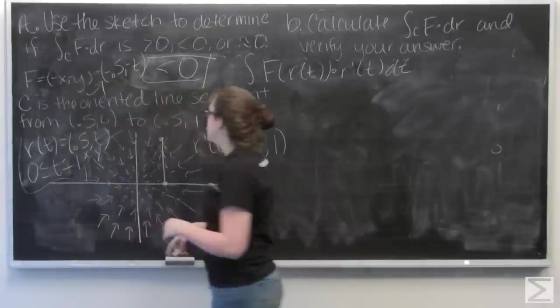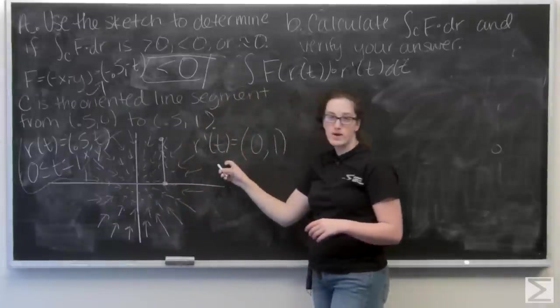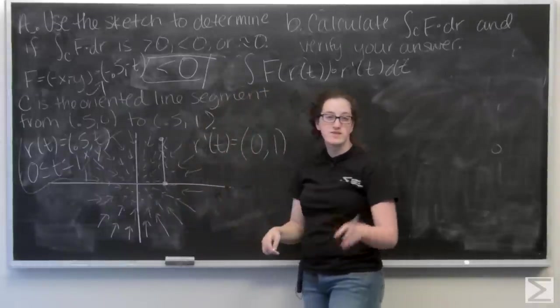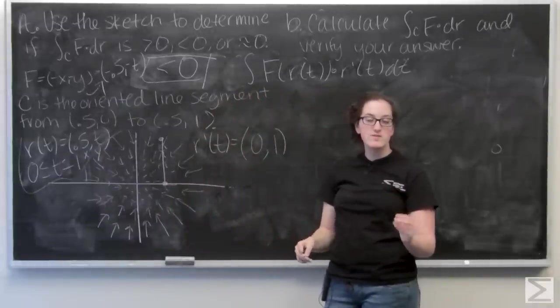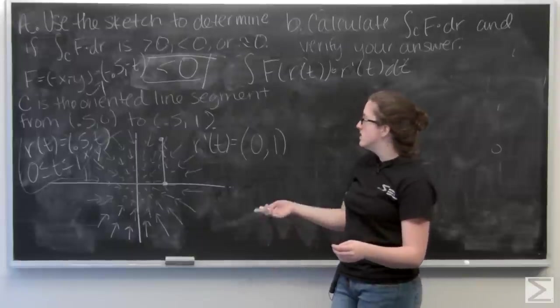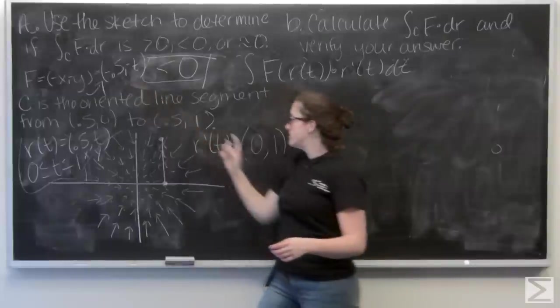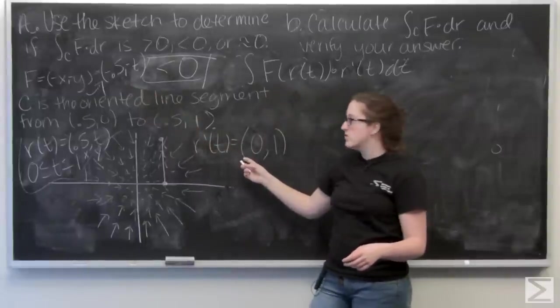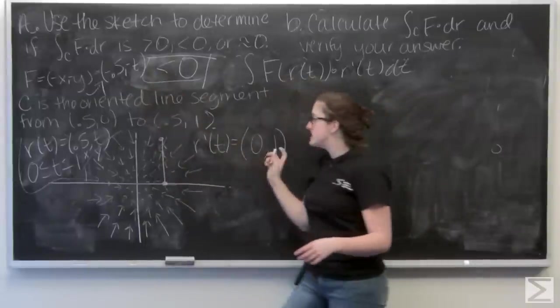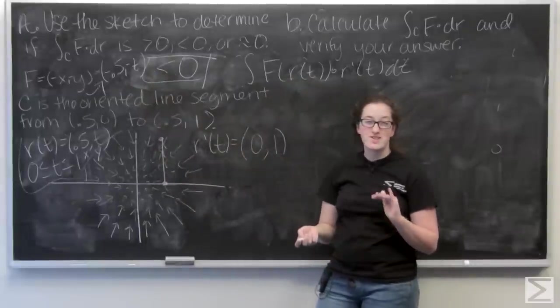And now I want to take the dot product of that with r prime of t. So remember that's the product of the i components of the vectors plus the product of the j components of the vectors. So I have 0.5 times 0, which is 0, plus negative t times 1, so my dot product is just negative t.